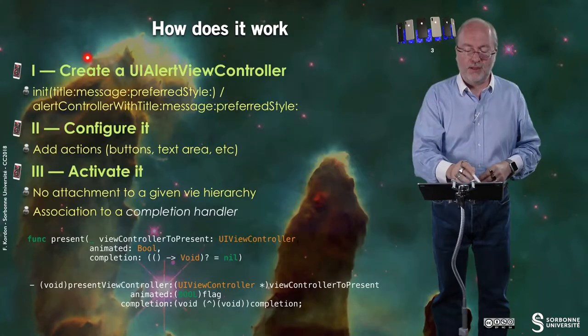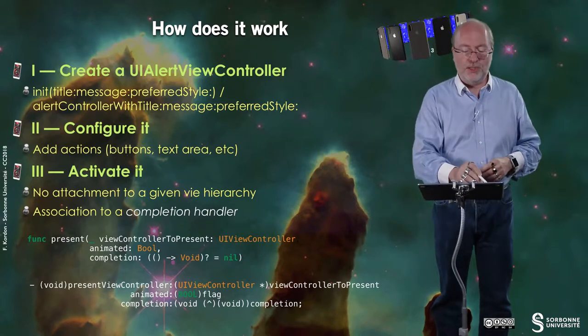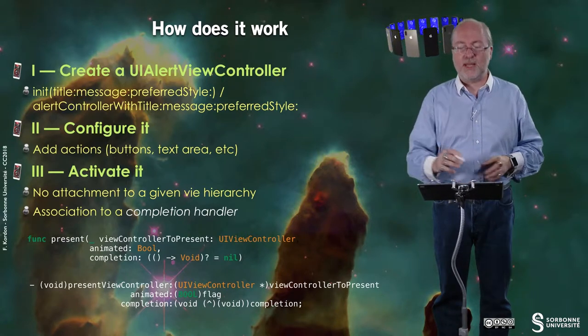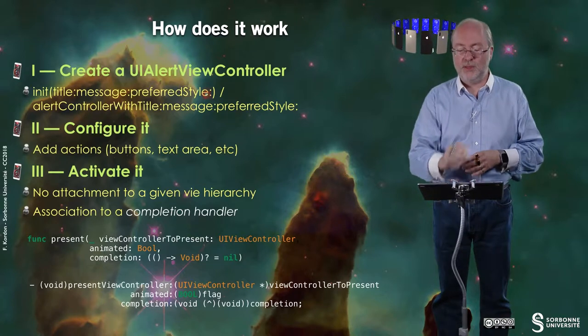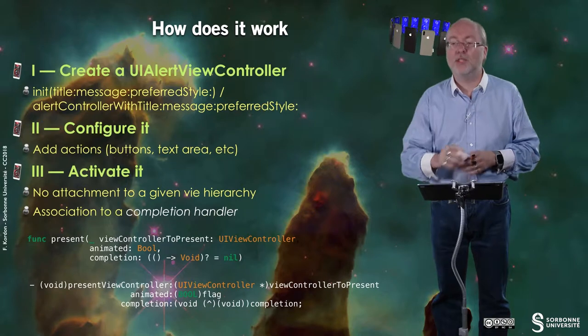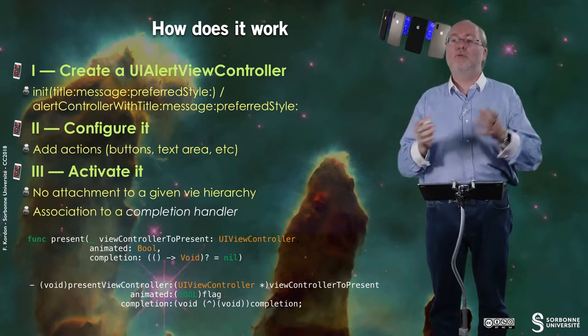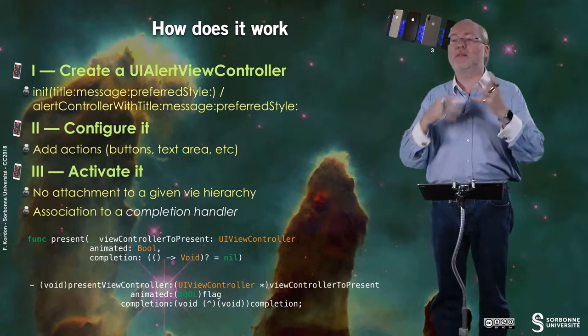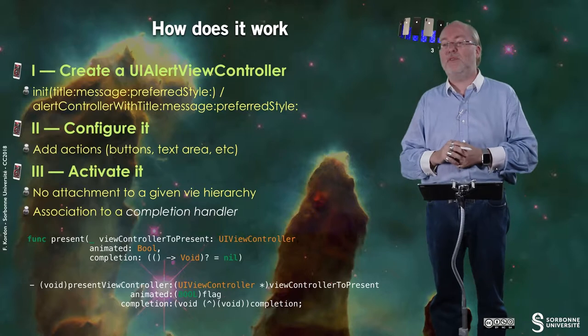How does it work? First, you create a UIAlertViewController. You init it with title, a message with a preferred style. You have the method in Swift and the method in Objective-C. Then you configure it. You add action buttons, you can add the text area, et cetera. And then you activate it.